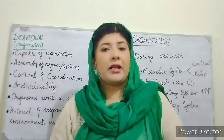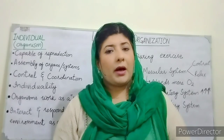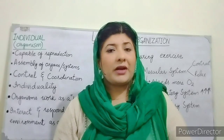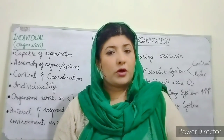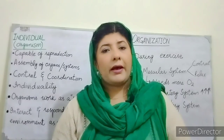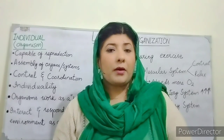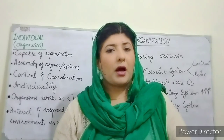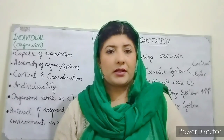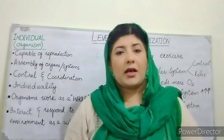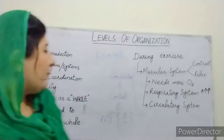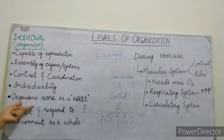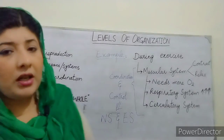This coordination and control of our brain, which is the central nervous system, is controlled. Our body's hormonal system, which is the endocrine system, also participates. Moreover, these organisms work as a whole and respond to the external environment.